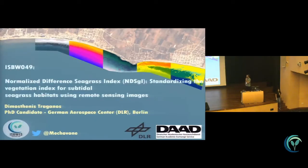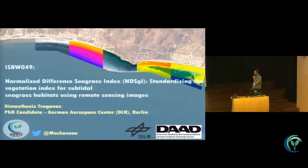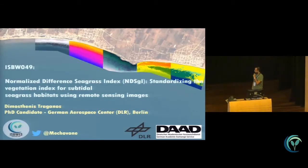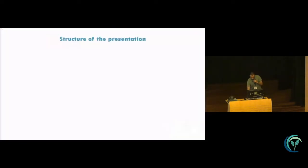My name is Dimos. I am a PhD candidate in my third year at the German Aerospace Center in the not-so-tropical Berlin. Today I would like to present our latest mapping efforts using remote sensing — specifically, a new development and standardization of an index for seagrass mapping, mainly for Mediterranean seagrass habitats but with implications for other species and regions.